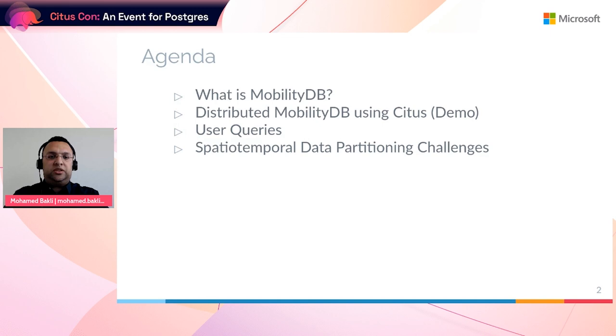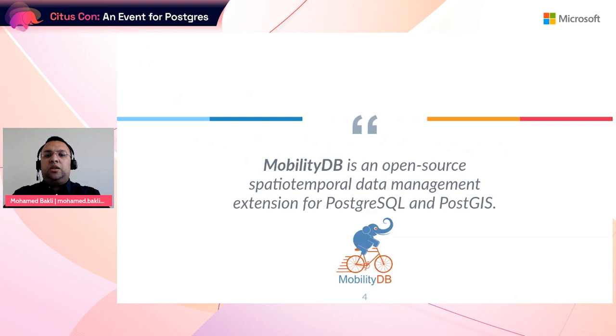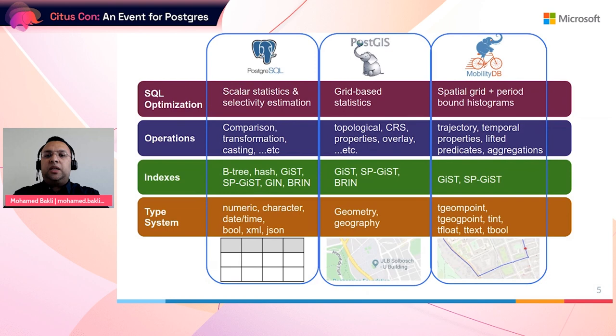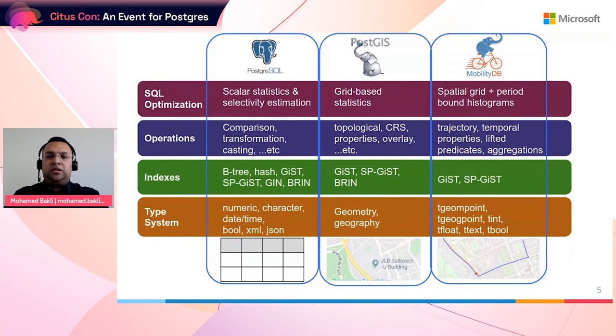What is MobilityDB? MobilityDB is an open source spatial temporal data management extension for Postgres and PostGIS. Postgres is an extensible database system. It supports primitive types like numbers, text, and also some advanced types like XML and JSON. It has indices that make sense for those types, used for fast random access and joins, and a variety of operations exposed in SQL. It also includes a query optimizer providing cost-based optimizations, statistics collection, and selectivity estimation functions for the data types it supports.